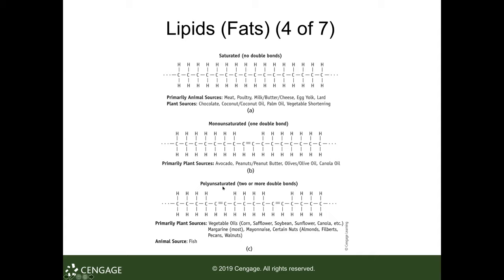Polyunsaturated fat has two or more carbon double bonds. Sources include vegetable oils — corn, safflower, soybeans, sunflower, canola — as well as margarines, mayonnaise, almonds, filberts, pecans, and walnuts. With two or more carbon double bonds, there is less hydrogen. Saturated fats are solid at room temperature, and the more unsaturated a fat is, the more it behaves like an oil.